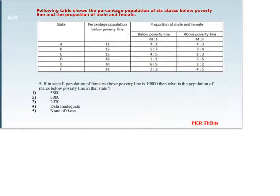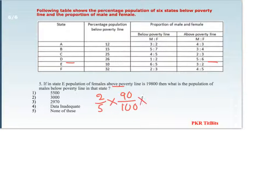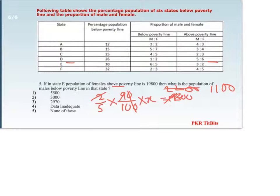Next question: if in state E the population of females above poverty line is 19,800, then what is the population of males below poverty line in that state? For state E, the female ratio above poverty line is 2 by 5. Since 10% is below poverty line, the remaining 90% is above poverty line. So: (2/5) × (90/100) × X = 19,800.